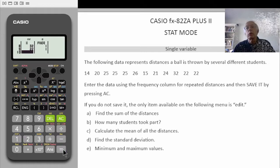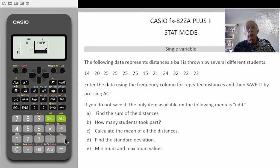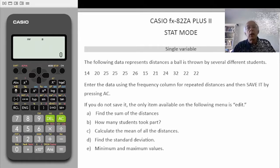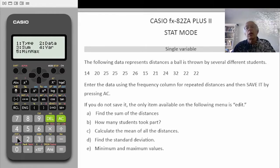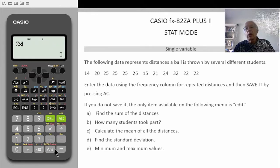22 equals — 22 appears multiple times in the data. After entering all the data, you press shift, edit and another menu appears. There you see number 3, the sum. Select 3 — we are not wanting sum squared, we are wanting sum, so you select 2, equals: 271. That is the sum of our data. Clear the screen.